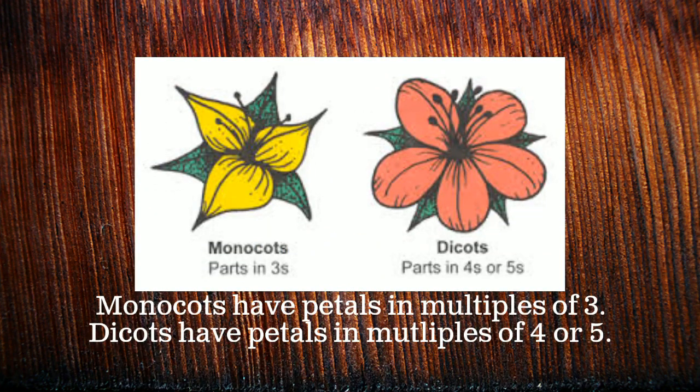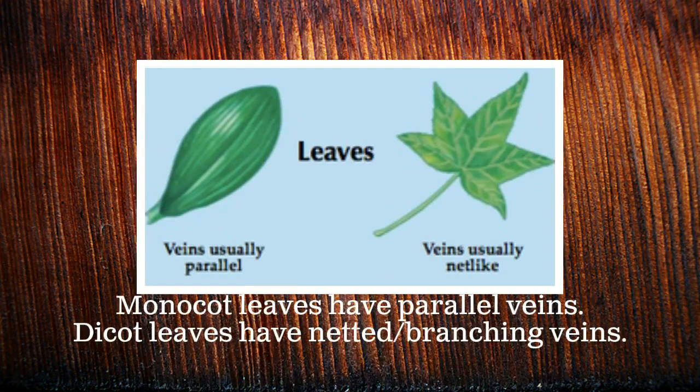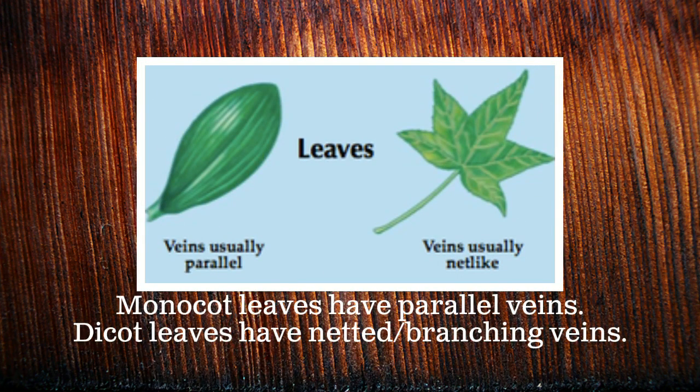The petals on a monocot are found in multiples of three, while the petals on a dicot are in multiples of four or five. The leaves of a monocot have parallel veins, while the leaves of a dicot have netted, or branching, veins.